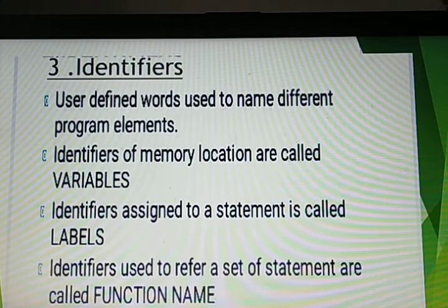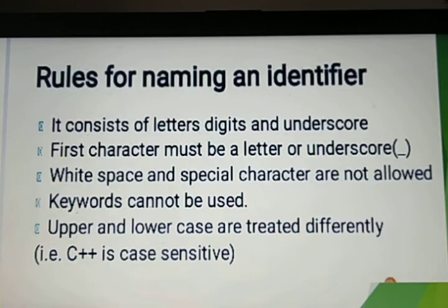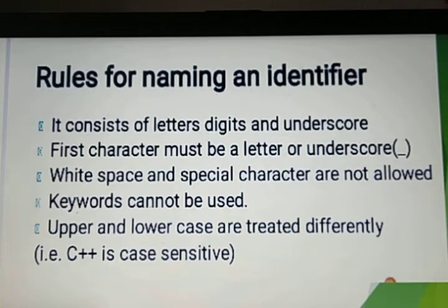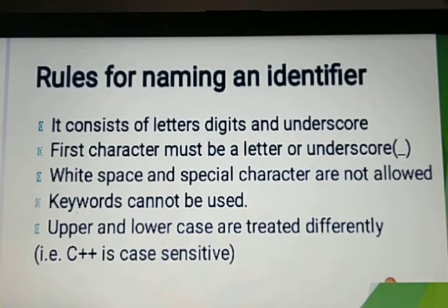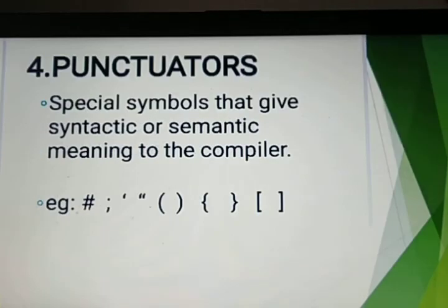For example, variables like a, b, x, y, number one, number two — all of these are known as identifiers. When naming an identifier, we have to follow certain rules. First, it consists of letters, digits, and underscore. The first character must be a letter or an underscore — you cannot start with a digit. White space and special characters are not allowed except the underscore. Keywords cannot be used. Finally, uppercase and lowercase are treated differently because C++ is a case-sensitive programming language.